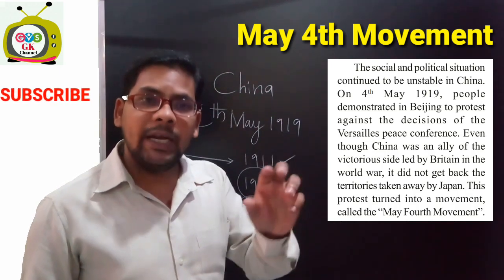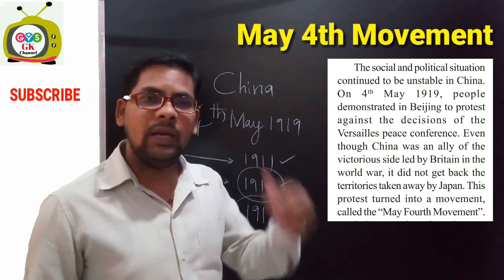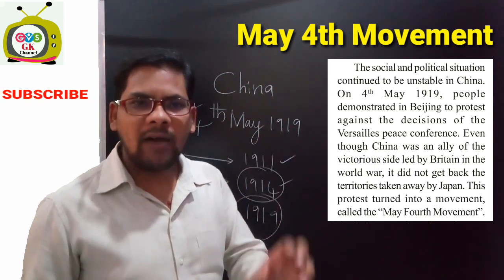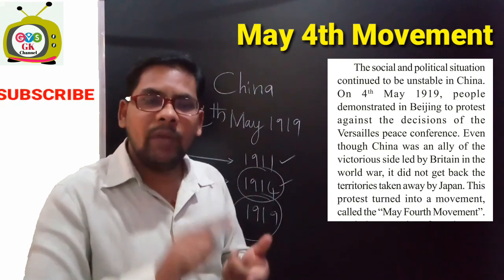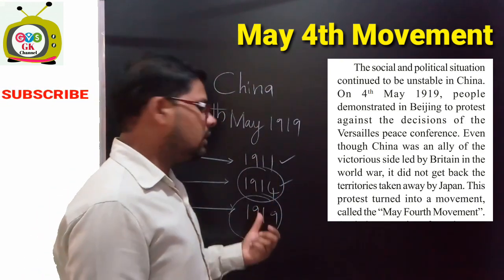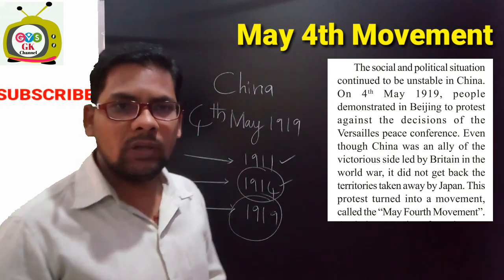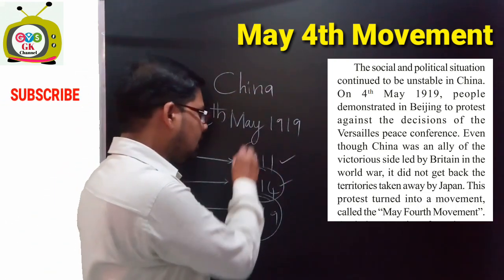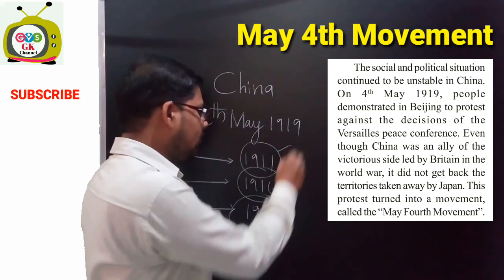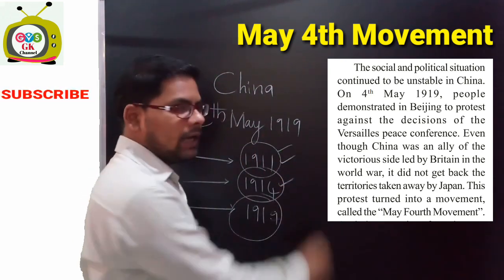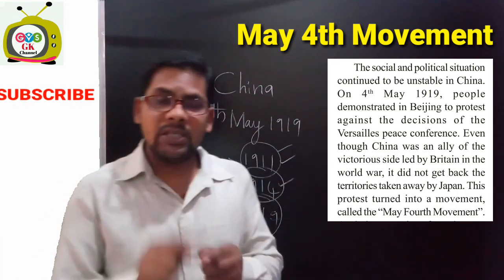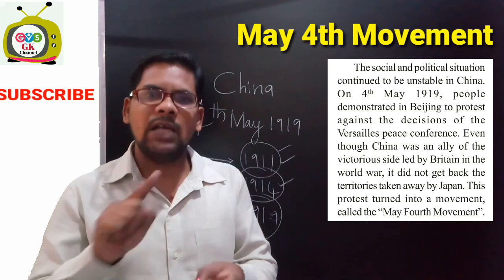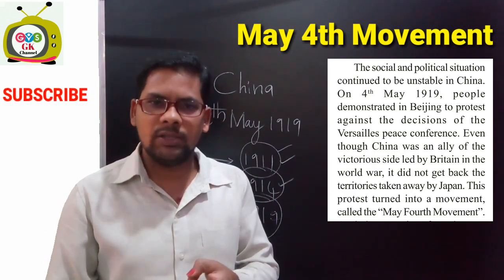The second major reason was that territories occupied by Japan before 1919 were not returned to China, even though China was on the victorious side. These are the very important years related to this topic — 1911, 1914, and 1919. Based on this information, you can write answers for one-mark, two-mark, and four-mark questions.